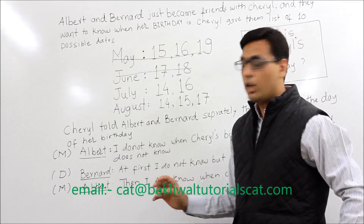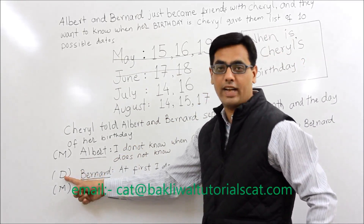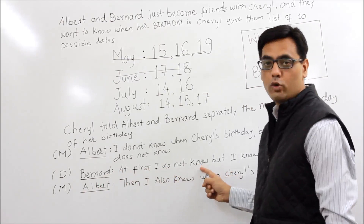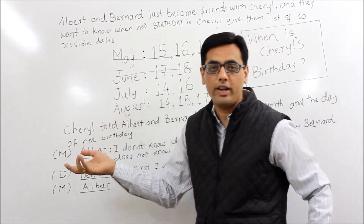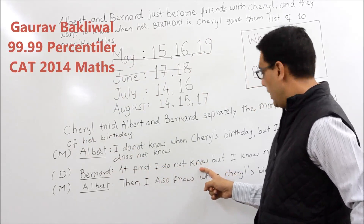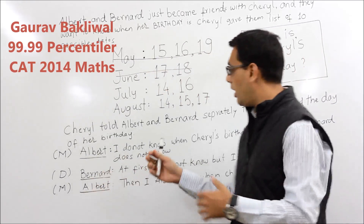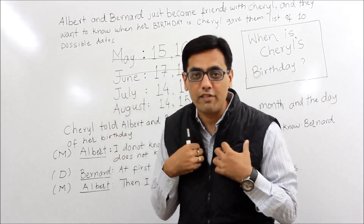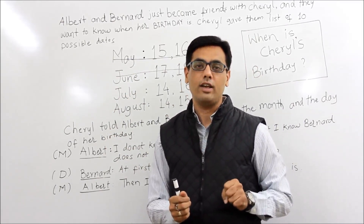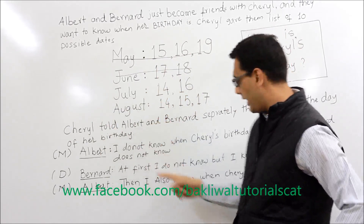Now the moment Bernard heard Albert's statement, Bernard — who has been given the date — can see the date. He says: 'At first I did not know,' which is obvious because all the dates have something in common with another month, so there are various options. But then he says: 'I know now.' The fact that Bernard now knows the answer is either July or August, based on the clue given by Albert, means he can deduce the exact date, because he can see the date in his hands.